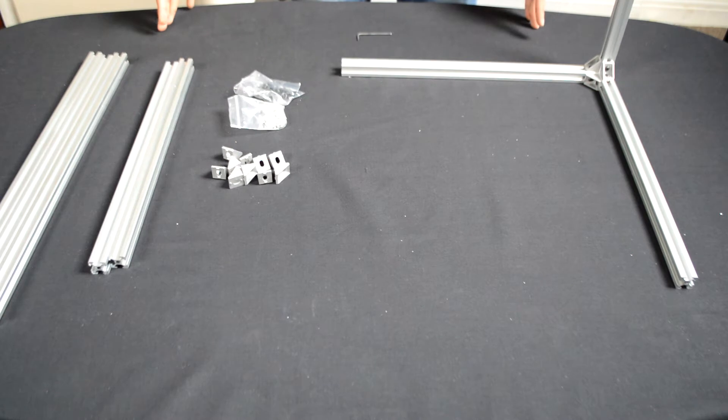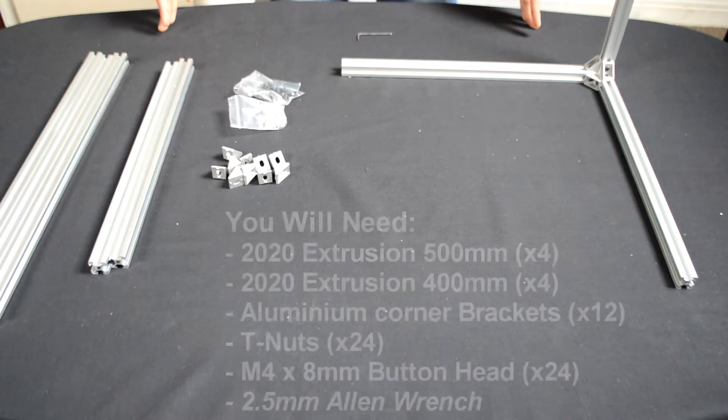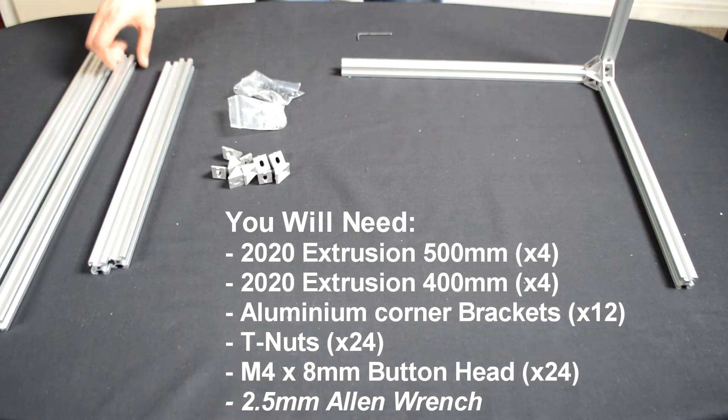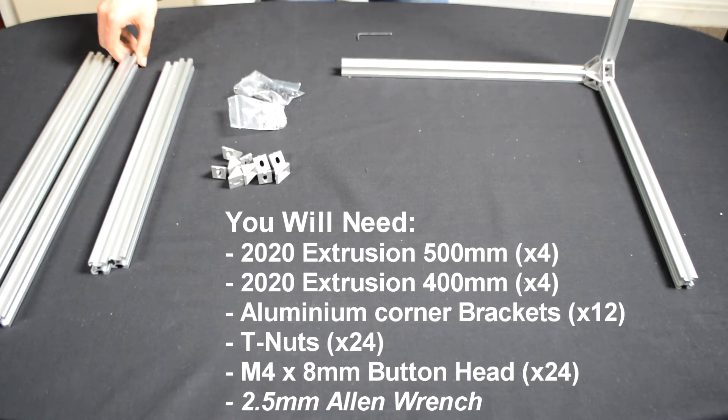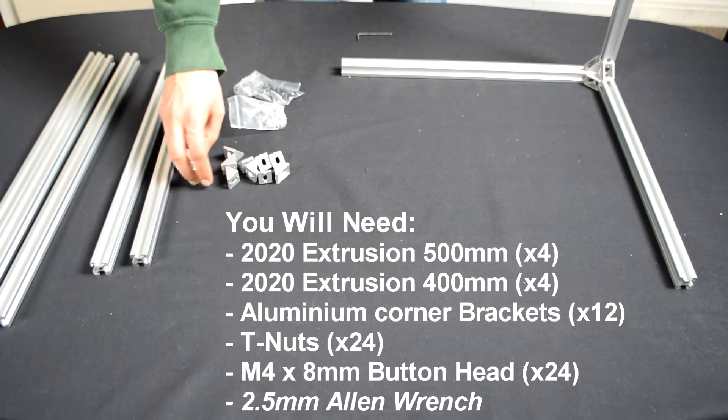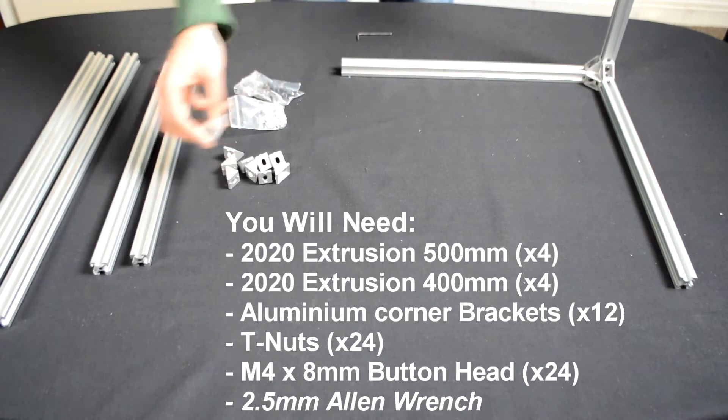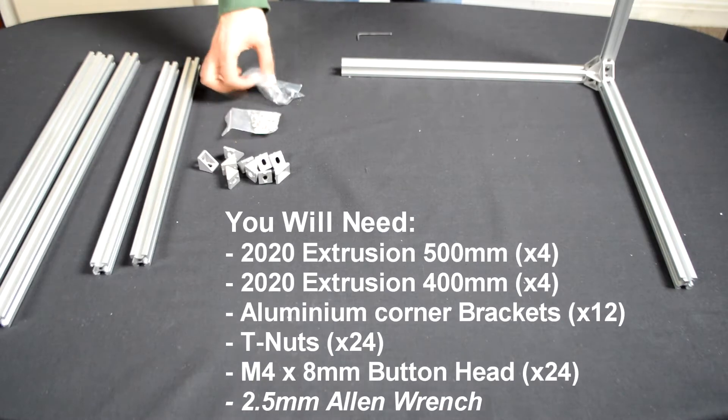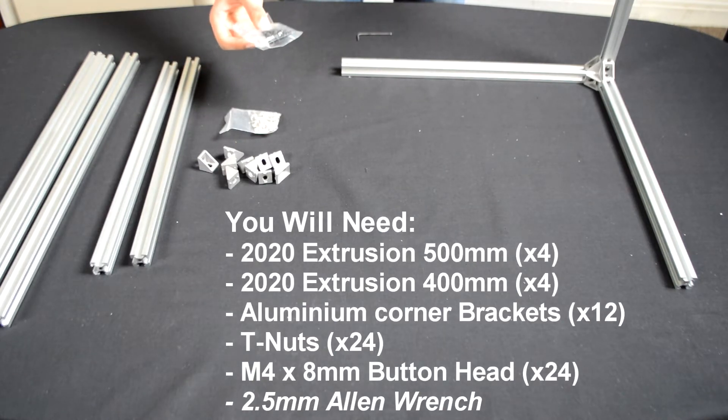Right, so section A, step 1. First thing you're going to need to do is find four 500mm aluminum extrusions and four 400mm aluminum extrusions, the 12 aluminum corner brackets and bag of T-nuts and the bag of M4 by 8mm button head bolts.